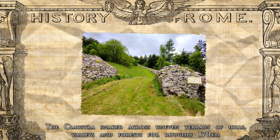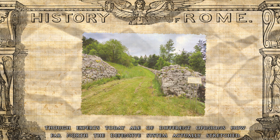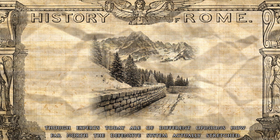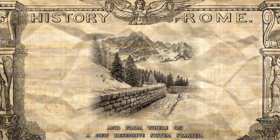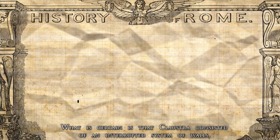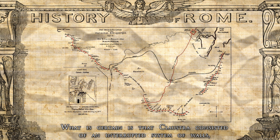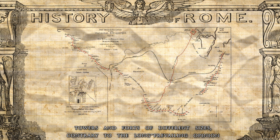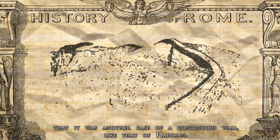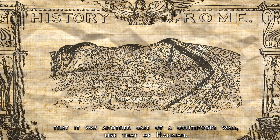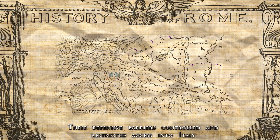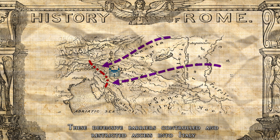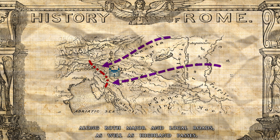The Claustra snaked across uneven terrain of hills, valleys, and forests for roughly 170 kilometers, though experts today are of different opinions on how far north the defensive system actually stretched and from where a new defensive system started. What is certain is that the Claustra consisted of an interrupted system of walls, towers, and forts of different sizes, contrary to the long prevailing opinion that it was another case of a continuous wall like that of Hadrian. These defensive barriers controlled and restricted access into Italy and the heart of the Roman Empire from the east along both major and local roads as well as highland passes.